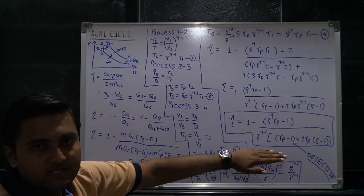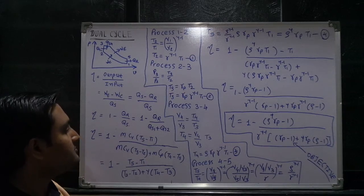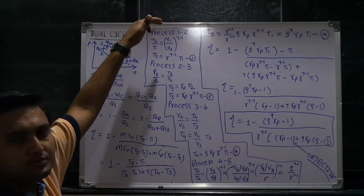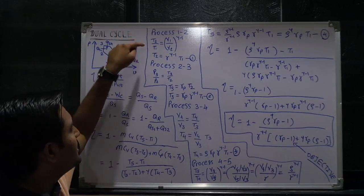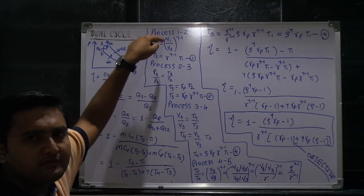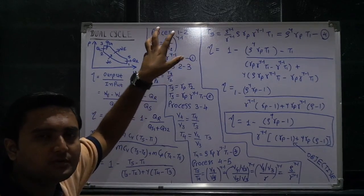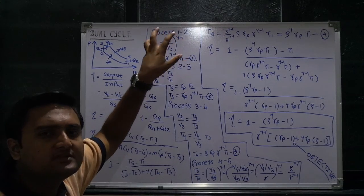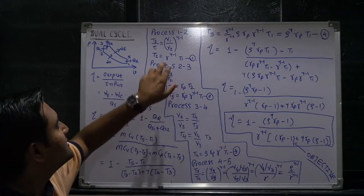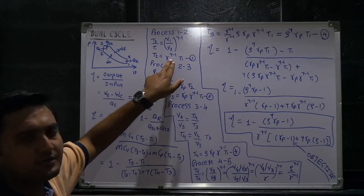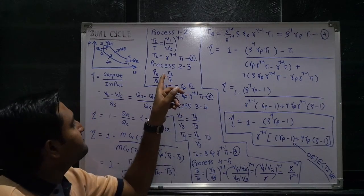This is an important derivation that is sometimes asked in examinations. For process 1 to 2, isentropic process, T2 divided by T1 equals (V1/V2) raised to gamma minus 1. V1/V2 is the compression ratio, denoted by r. So T2 equals r raised to gamma minus 1, multiplied by T1. You can check the isentropic process video in this channel for more details on compression ratio and how this equation is derived.